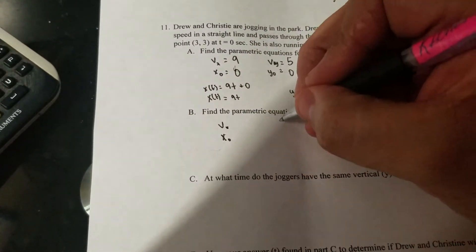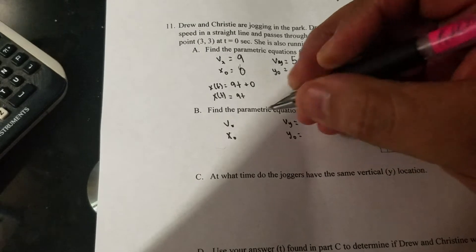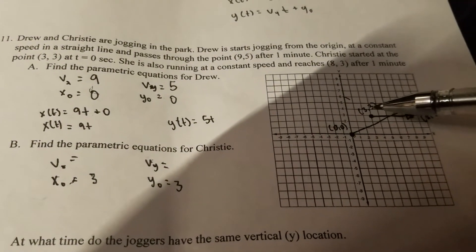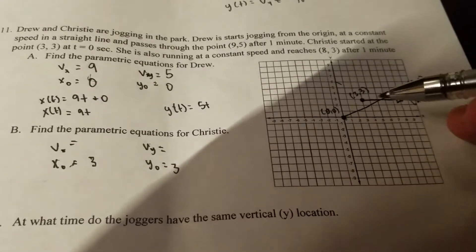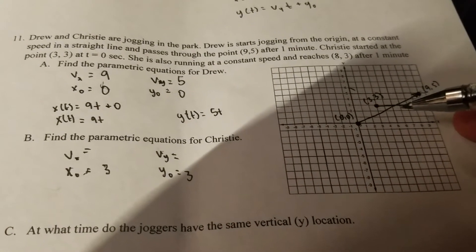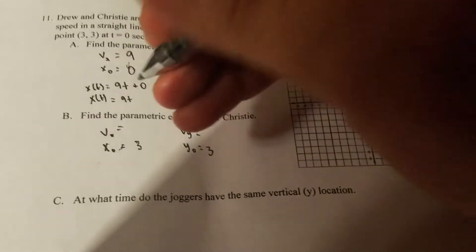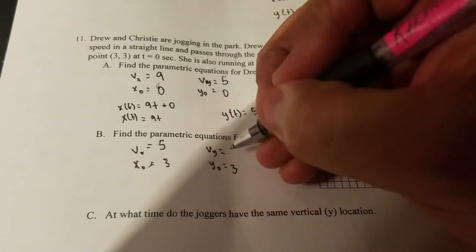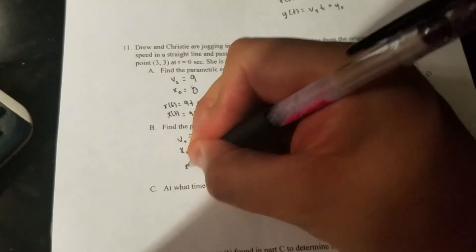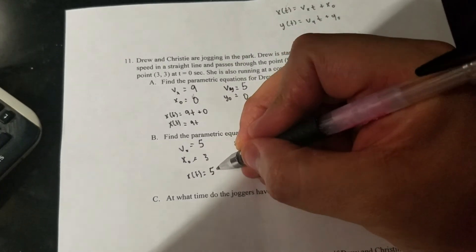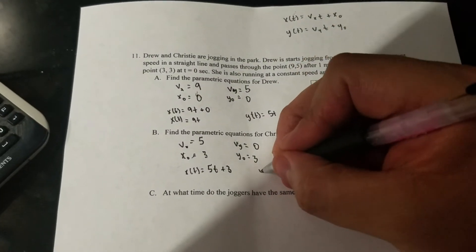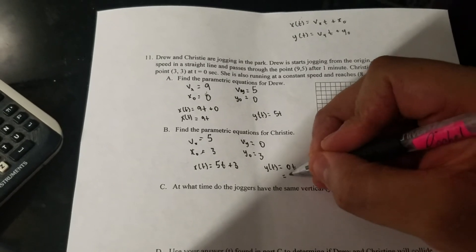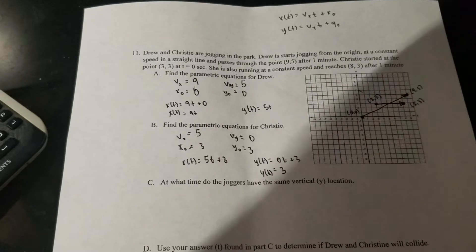We're gonna do the same thing find the equations for Christie. So vx and x initial and vy and y initial. I'm gonna start with the initials because here guys I started at three three so this is easy, the x and the y are the same, so three and three. In the x direction I saw her move one two three four five in the x direction. And well zero in the y direction because look she's not moving up or down, so my vy is zero. So my x of t equation is vx which I know is five times t plus three. My y equation is vy which is zero t plus three which is just equal to three.